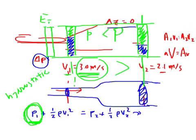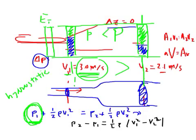Rearranging the equation, we get: P2 minus P1 equals one-half rho times V1 squared minus V2 squared. So the difference in pressure across these two sections equals one-half rho times the difference in the velocity squared. Let's go ahead and compute this.